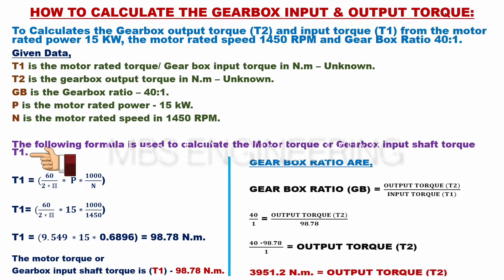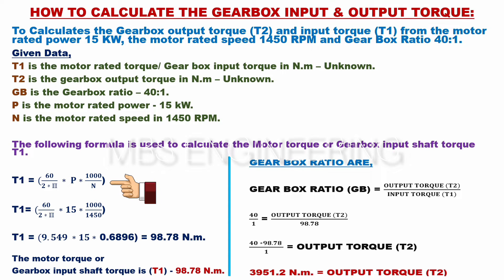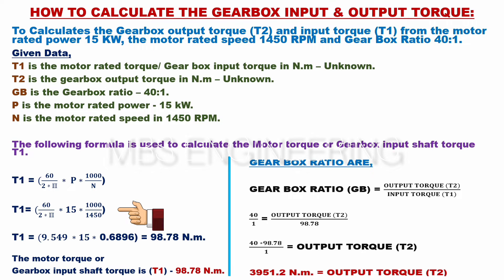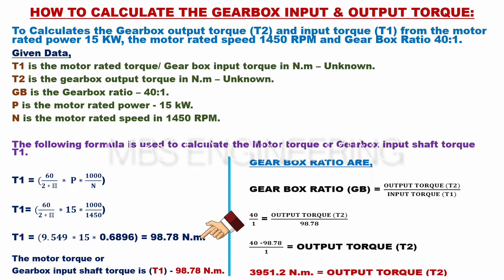The following formula is used to calculate the motor torque or gearbox input shaft torque T1: T1 = (60 × P × 1000) ÷ (2 × π × N). Applying the given data: T1 = (60 × 15 × 1000) ÷ (2 × π × 1450), which simplifies to 9.549 × 15 × 0.6896. The gearbox input torque T1 is 98.78 newton meters.